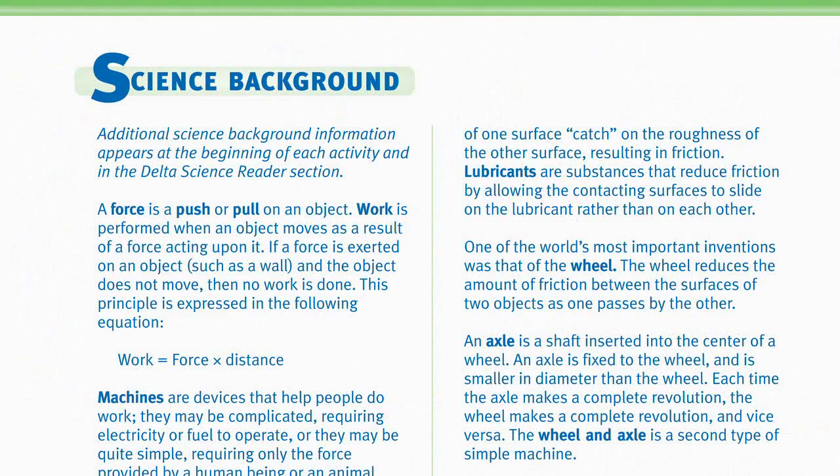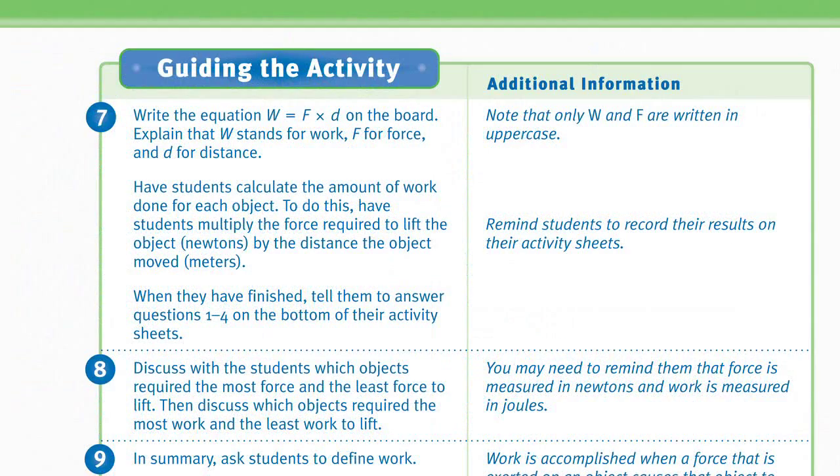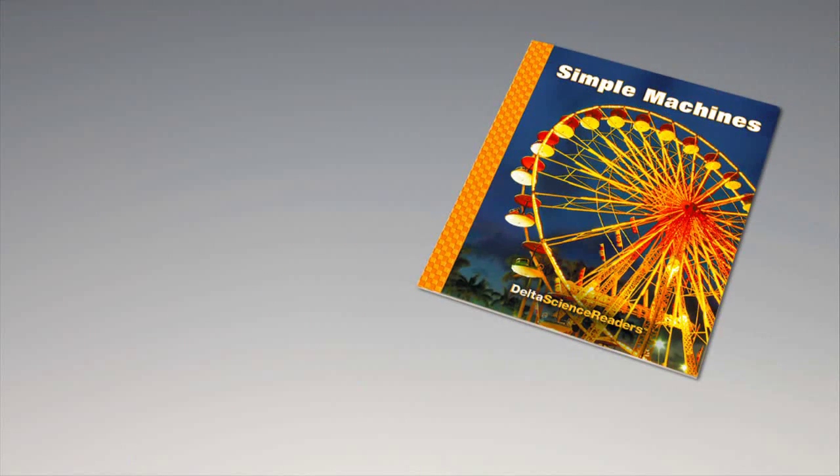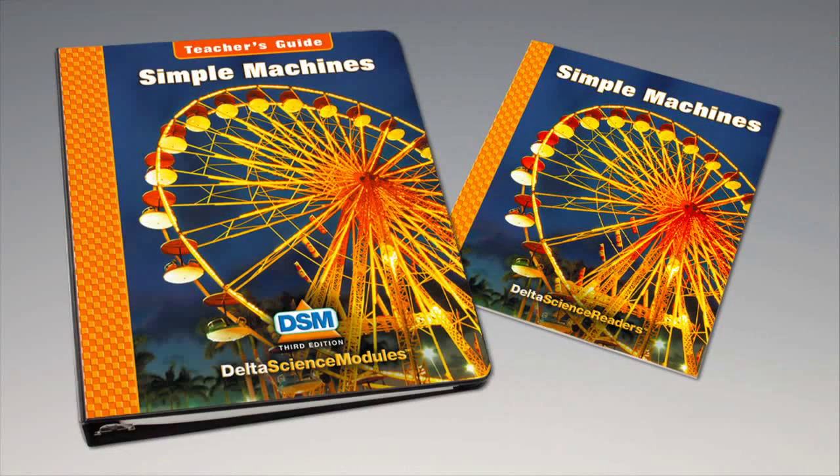To conclude the activity, discard the rivets and the scraps of wood with the nails in them. For science background, reinforcement activities, curriculum connections, and information about the delta science reader, please consult your DSM teacher's guide.